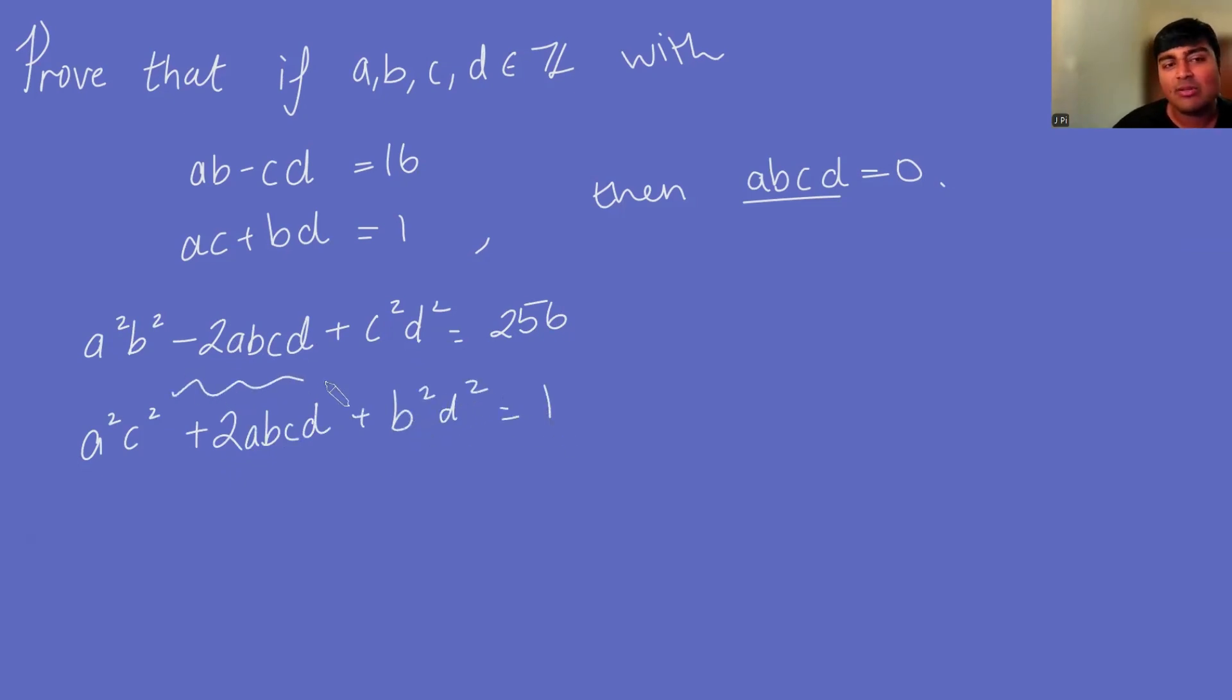And now you can notice we've got a minus 2abcd and a plus 2abcd, so it seems tempting to add these two guys up. Let's do that. Well, if I add up a squared b squared and a squared c squared, that's going to give me a squared times b squared plus c squared. And similarly here, I can factor out the d squared, and I'm going to get b squared plus c squared, and 256 plus 1 is 257.